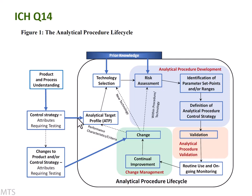Once you identify you need a method, you enter the analytical procedure life cycle. The first step is the Analytical Target Profile, or ATP, which defines what you want the method to be able to do — essentially defining your objective before you begin. In theory, you decide what the method needs to do and then choose an appropriate technology, such as HPLC. That decision is based on your expertise and prior knowledge.